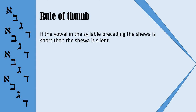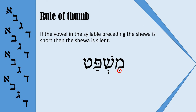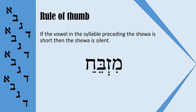Let us consider several examples. The word Mishpat — we have a Sheva and the preceding vowel is Chirek. Chirek is a short vowel, which means the following Sheva is silent and is not pronounced. We read this word as Mishpat. Another example: Mizbah. Again, we have a Sheva and the preceding vowel is Chirek, which is a short vowel. That is why Sheva is silent, and we read this word as Mizbah.